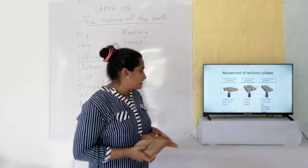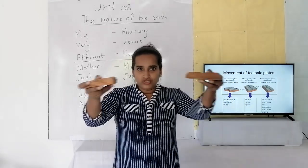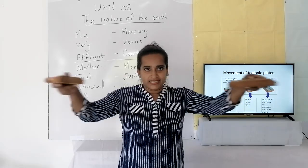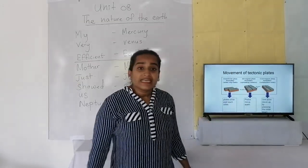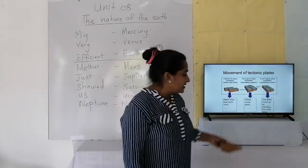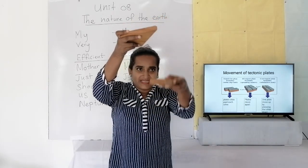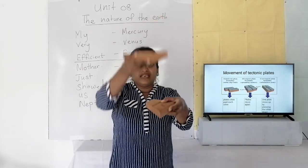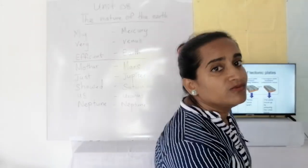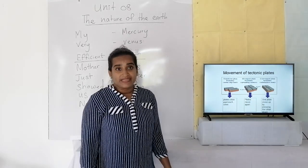The second method is that two tectonic plates move apart — they press away from each other. The third method is when one plate moves up by pressing the other plate down. Those are the three main methods of movement of tectonic plates.